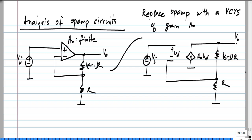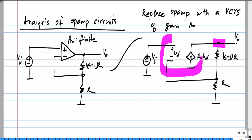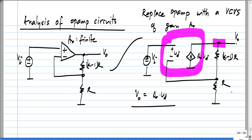Now we have this controlled source and we know how to handle voltage controlled voltage sources. We basically replace the voltage controlled voltage source with a super node, and we lose one equation — we cannot write KCL at that node. We replace that by the equation governing the voltage controlled voltage source. So we cannot write a KCL equation at that node, but we can write it at other nodes and use the control source equation: V naught equals A naught times V_D as the extra equation.